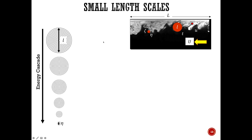We are familiar with energy cascade from the last class: in turbulent flows, the larger eddies break up into smaller eddies, and then the smaller eddies dissipate energy through viscosity. This is where we use the energy cascade to derive a relationship between the largest and smallest length scales.